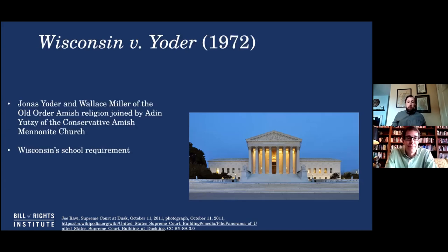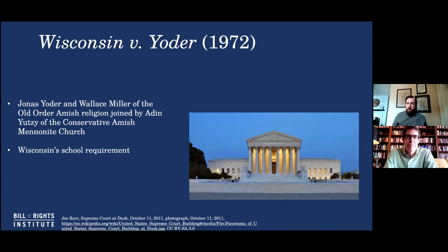So just to get right into the case, this takes place in the state of Wisconsin. The actual case began in the 1960s but was decided by the Supreme Court in 1972. You have members of two different Amish communities having a concern because they did not want their children to continue in the state schools all the way up until the state of Wisconsin's requirement — I believe it was 16 — that's what brought about the case. The school requirement was the law, and students were required by state law to stay in school until they were 16. But this ran up against some religious beliefs.